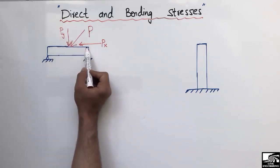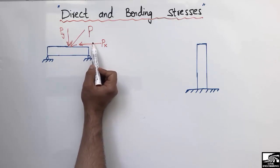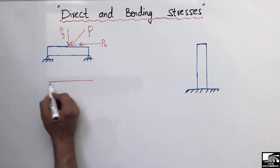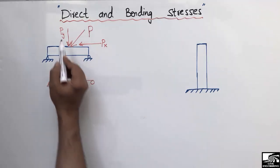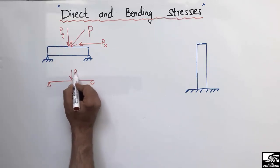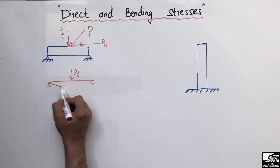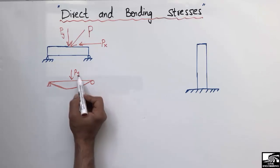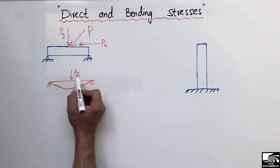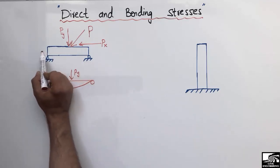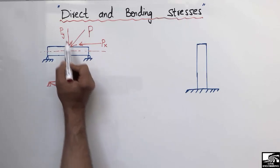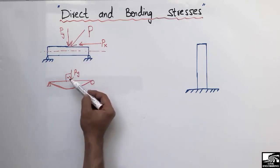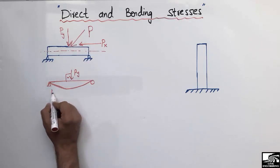Due to these two components, we will have two different types of stresses. If we consider only the vertical load Py acting on a simply supported beam, we will have bending stresses — the beam will bend and we will have bending stresses. This load is called the transverse load, and it acts perpendicular to the axis of the beam, at 90 degrees to the beam axis.